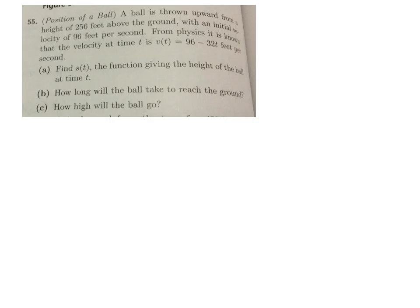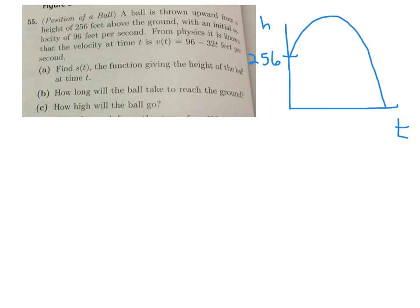Let's do the first warm-up problem. Following the rules, I see T to the 7 halves. Adding 1 — as 2 over 2 — gives me T to the 9 halves, divided by 9 halves, plus C. You would never leave it looking like that. Instead, keep T to the 9 halves and multiply by the reciprocal of 9 halves, which looks much better. That is your best answer.